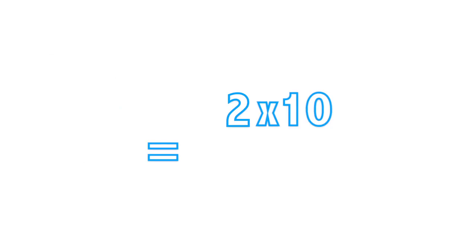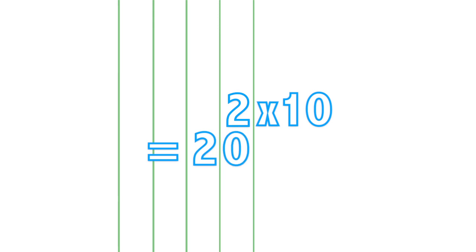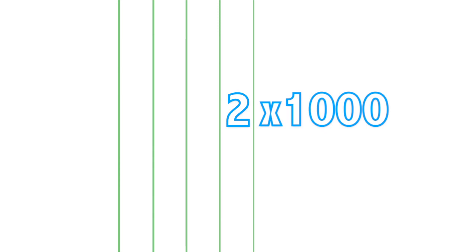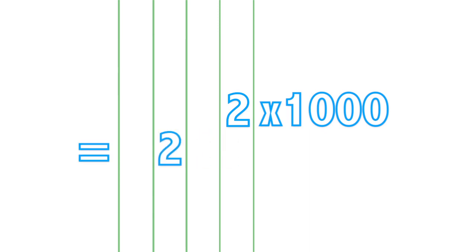When you multiply a number by 10, each digit of that number shifts to the left one number place. When you multiply a number by 100, you shift all the digits to the left two number places. And when you multiply by 1000, all the digits shift to the left three number places.